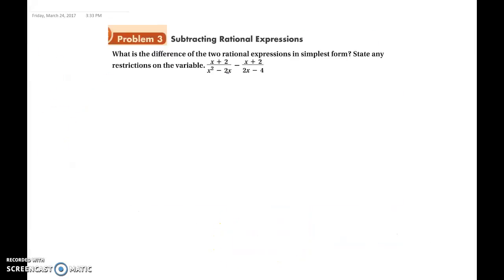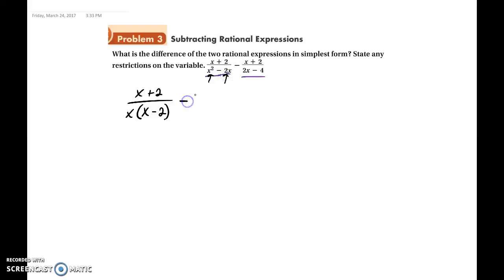Here we have this problem: x plus 2 over x squared minus 2x, minus x plus 2 over 2x minus 4. Same thing as before — we need to factor our denominators. So we're left with x plus 2 over x times x minus 2, and minus x plus 2 over 2 times x minus 2.